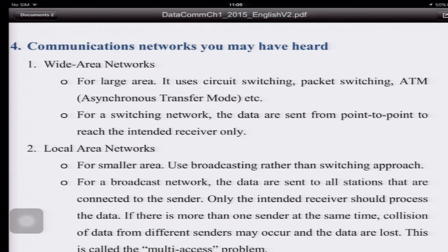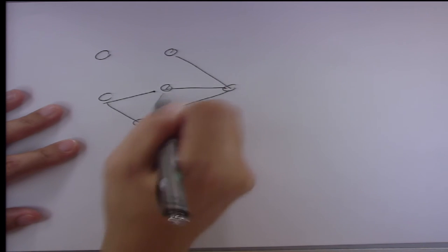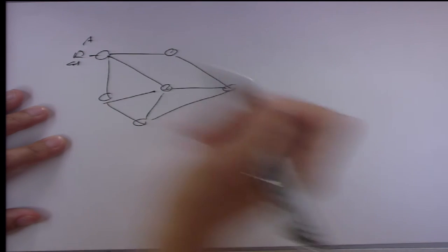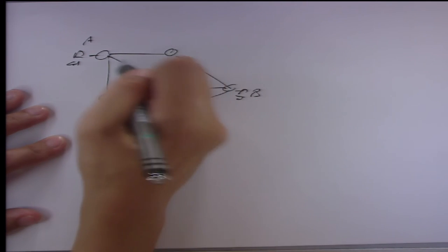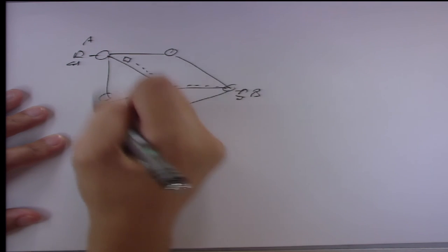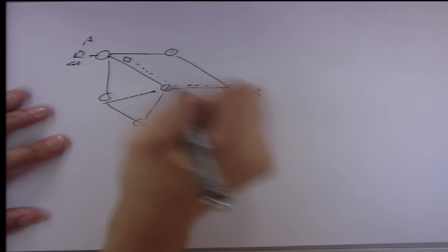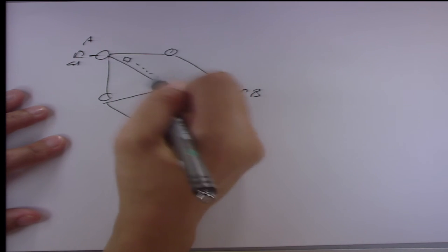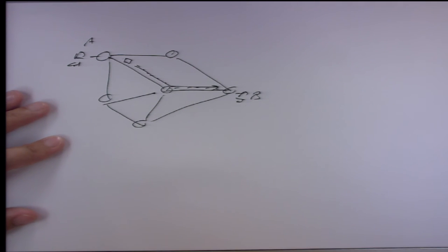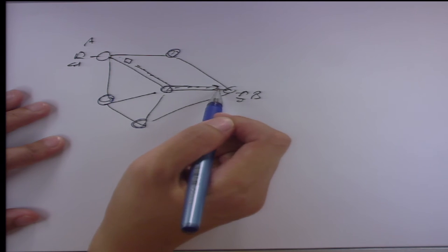Now for a switching network, the data are sent from point to point to reach the intended receiver only. If you have nodes connected together and you are sender A wanting to send to B, it will send your packet through this node and then to the next node. There are many routes to go to B, but when it selects a route, the other nodes will not see the data — only the nodes along the selected path can see it. This is called switching.